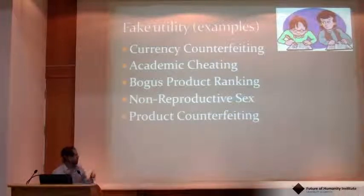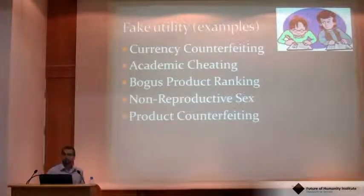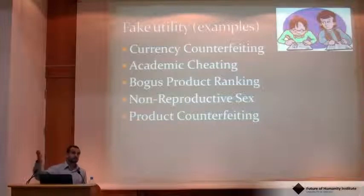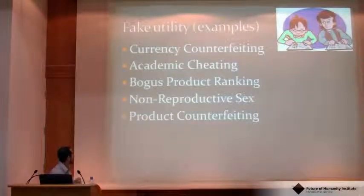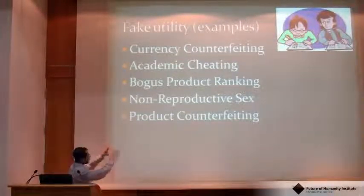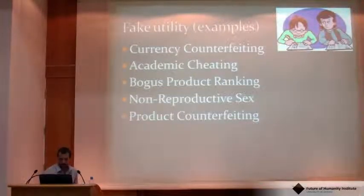Omohundro has a great paper describing different ways human beings cheat with utility computations. There are lots of ways we can produce counterfeit utility. Many of you are students here, so you know about how to go for a better grade rather than the greatest amount of knowledge. Counterfeit currency is another example. I'm not going to go over the details of non-reproductive sex — I'm sure you all know what I'm referring to.